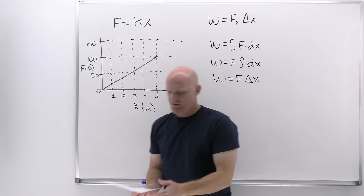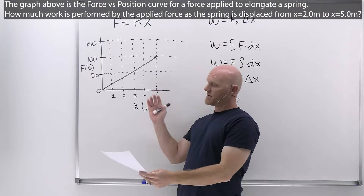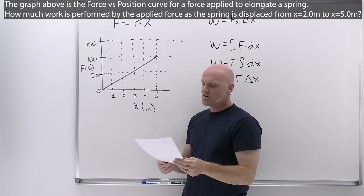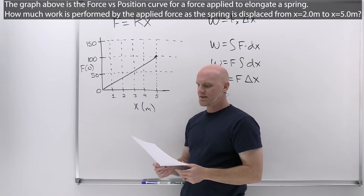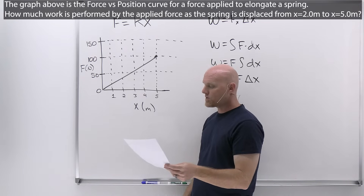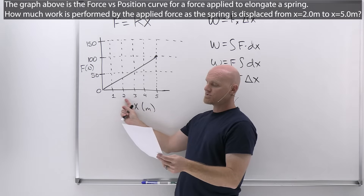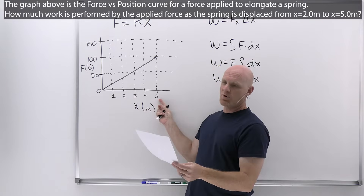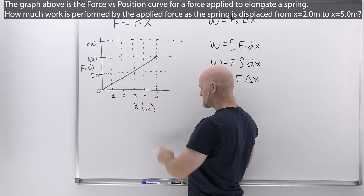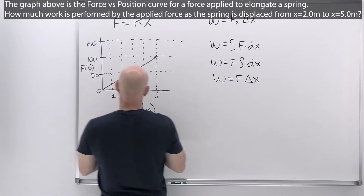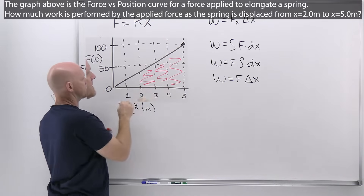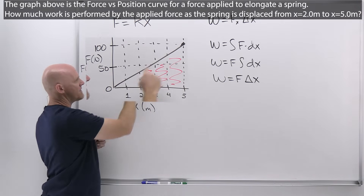For the problem we're going to answer, the graph shown is the force versus position curve for a force applied to elongate a spring. How much work is performed by the applied force as the spring is displaced from 2.0 meters to 5.0 meters? What that really means is I need the area under the curve from 2 meters to 5 meters.